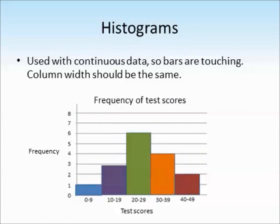Another type of graph that you could use is a histogram. These are used with continuous data. So here the bars are touching. The column width should be the same for every column. When using a histogram, put all of the possible categories along the x-axis, even if there is no data in those categories.